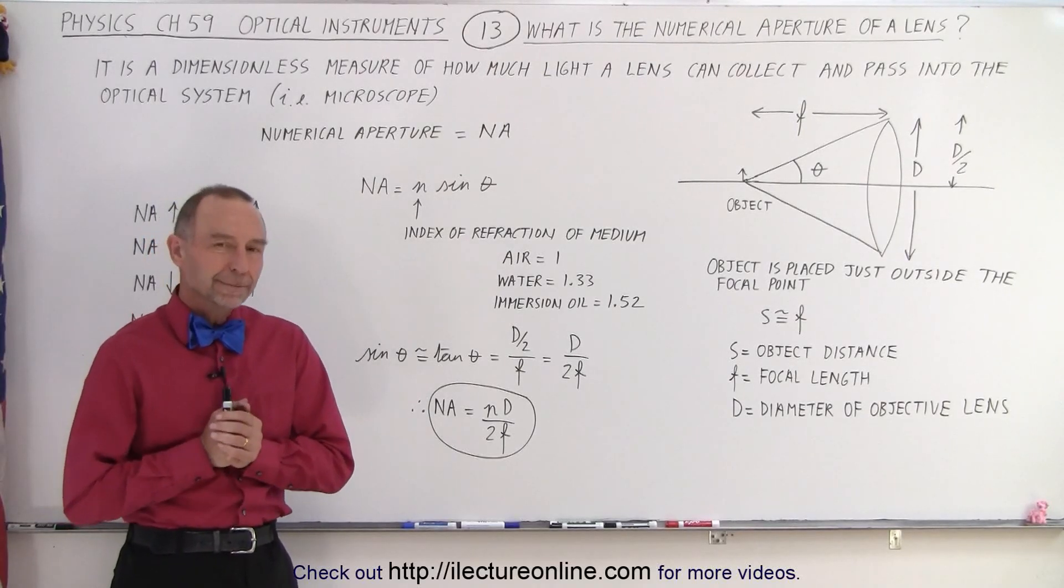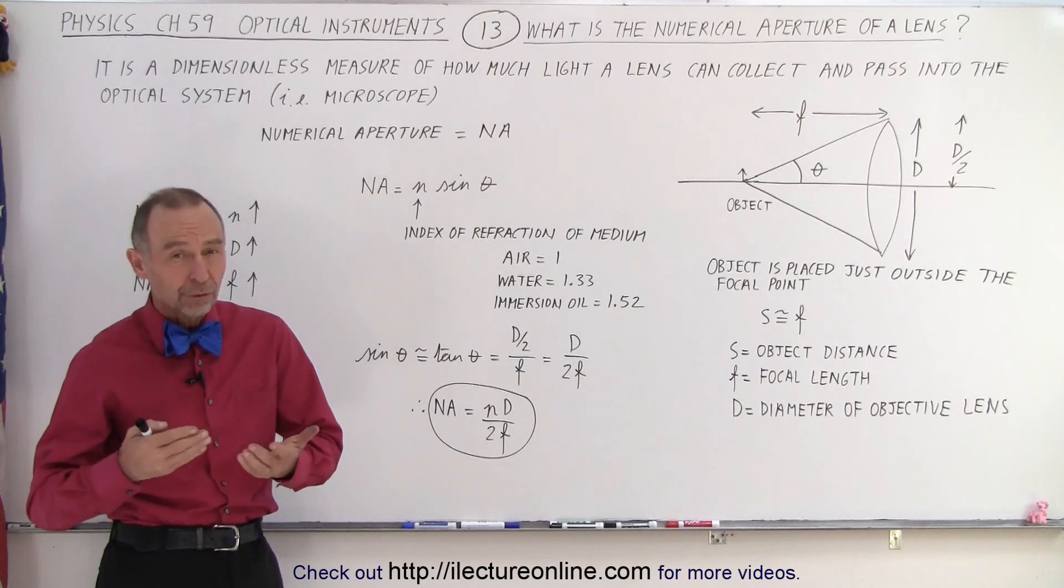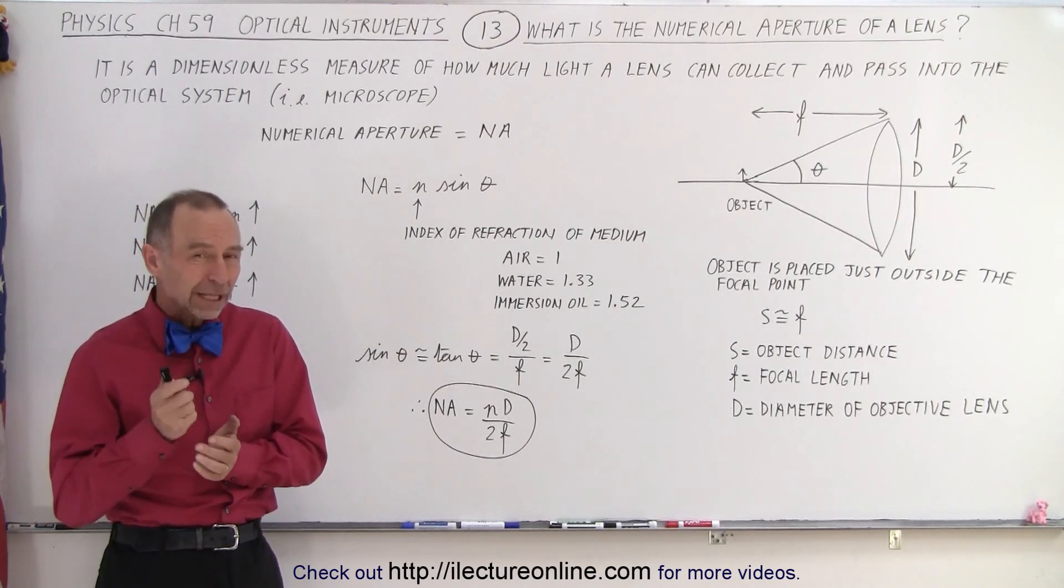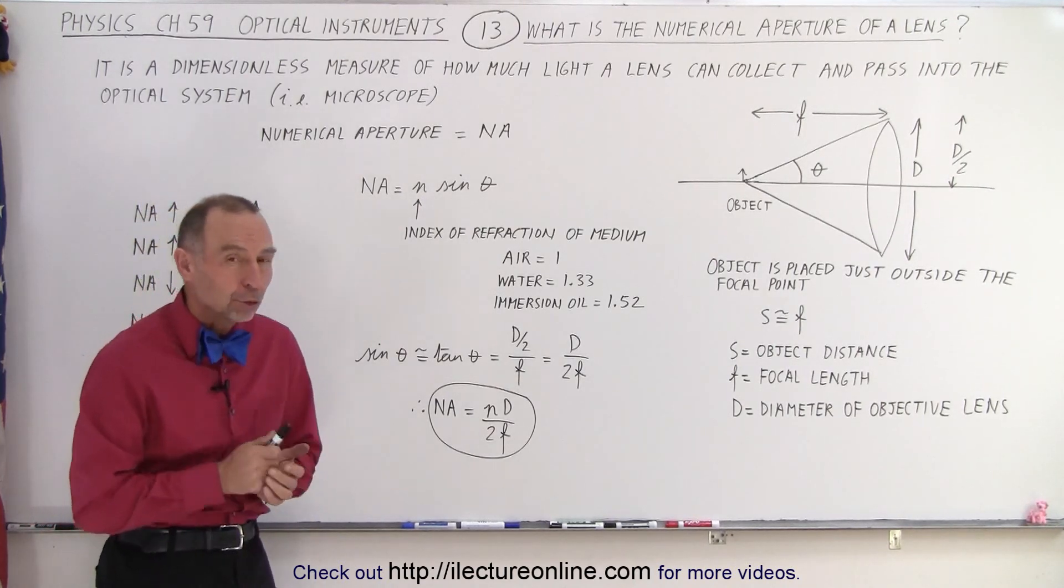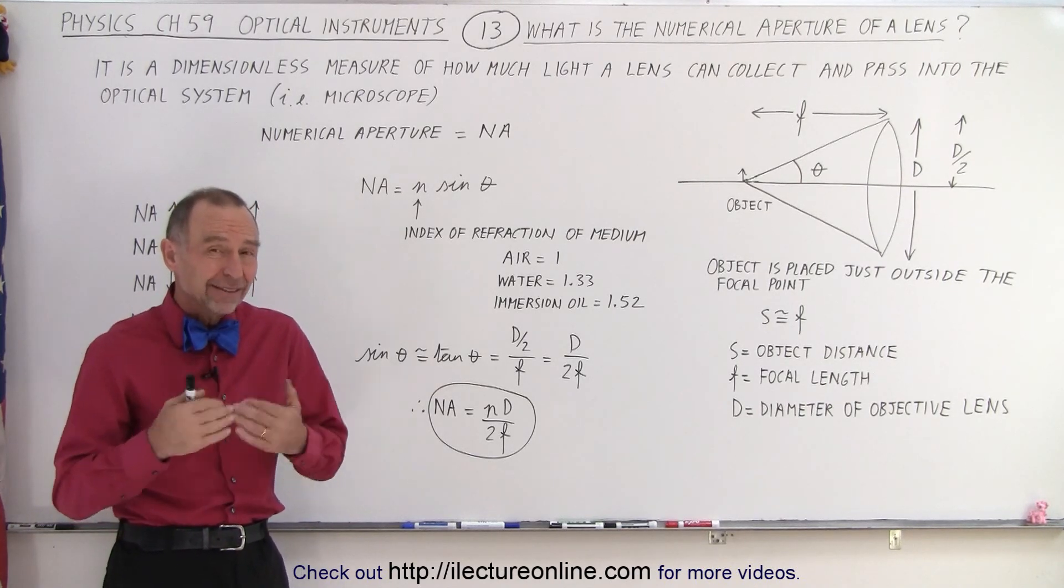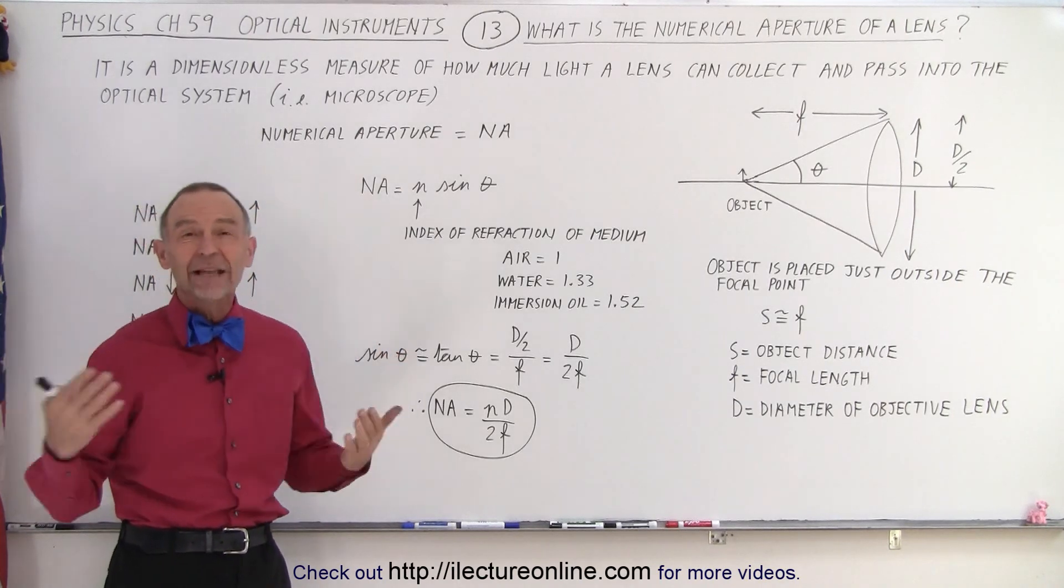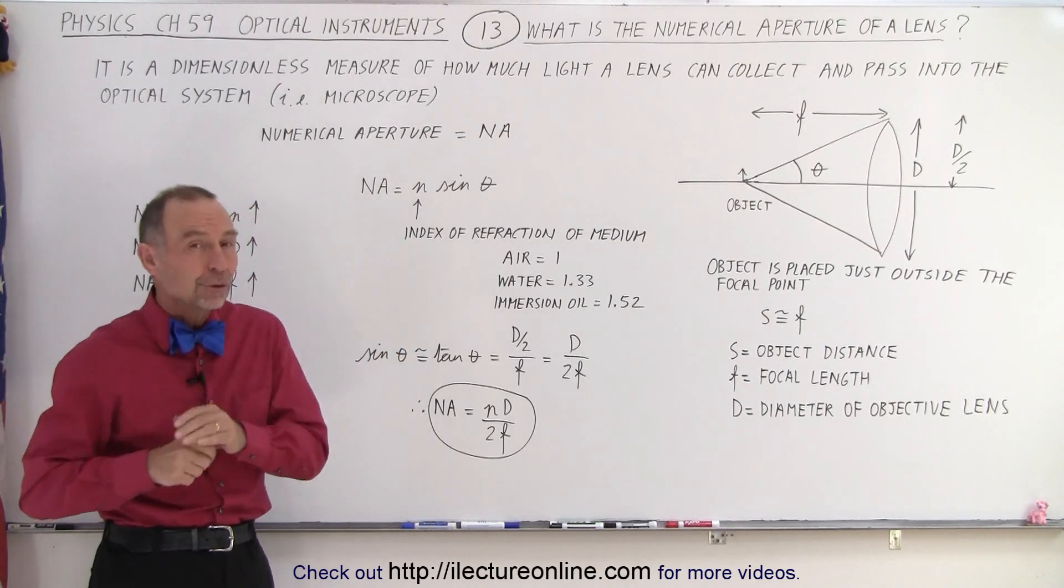Welcome to Electronline. Before we could explain what the second reason is why we use oil drops with microscopes, we need to explore the concept of numerical aperture of a lens. Essentially it's a dimensionless quantity that describes how much light a lens can collect and pass into the optical system, and that depends on a few things.